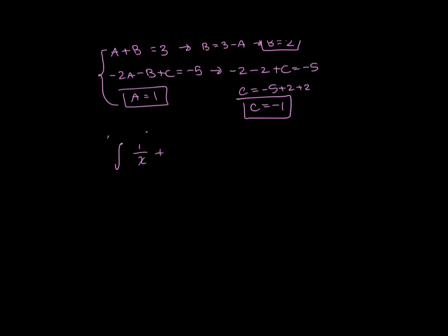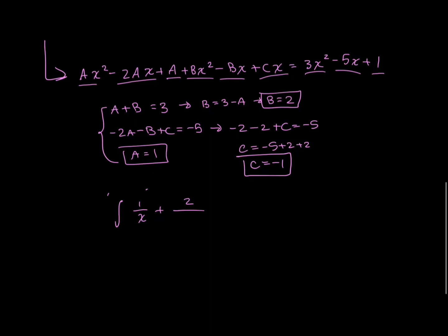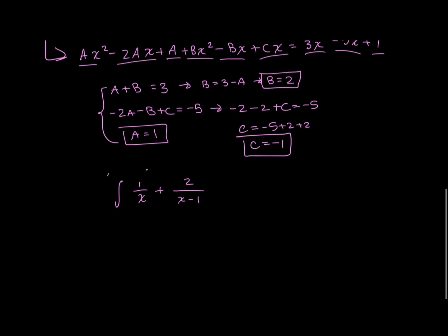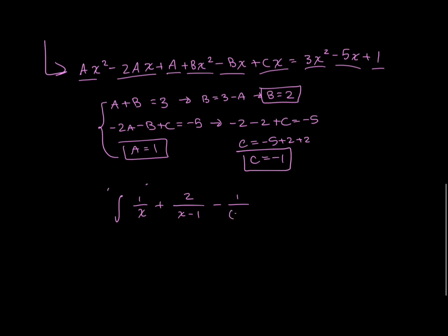I know that A is 1 over x. And then B is equal to 2. And originally, B was over x minus 1. Plus C, which is, actually, just negative 1 over, what was it, x minus 1 squared, dx.